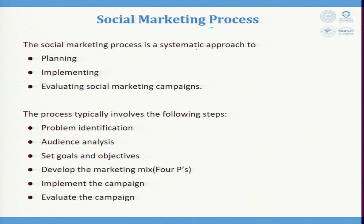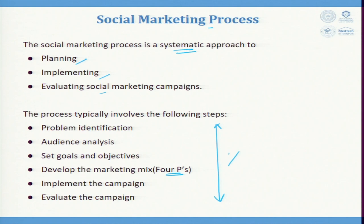The social marketing process is a systematic approach — not random — with proper planning, implementing, and evaluating social marketing campaigns. The process typically involves the following steps: problem identification, audience analysis, setting goals and objectives, developing the marketing mix of four P's, implementing the campaign, and evaluating the campaign.